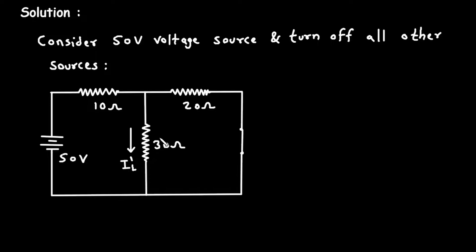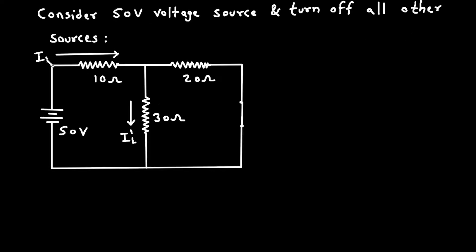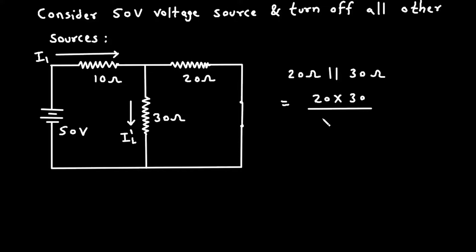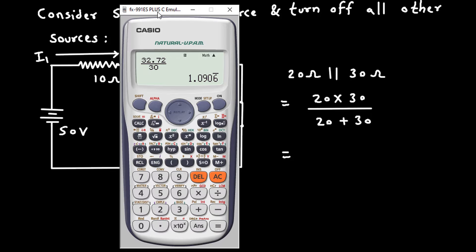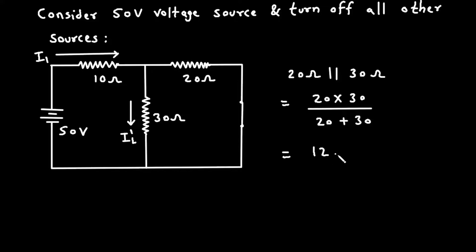Now we have to find I_L prime, so first we need to find the current I_1. We can see that the 30 ohm and 20 ohm resistors are connected in parallel. So 20 ohm parallel with 30 ohm gives 20 into 30 divided by 20 plus 30, which equals 12 ohm.